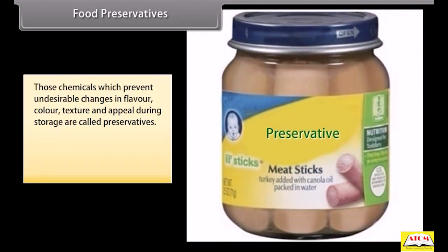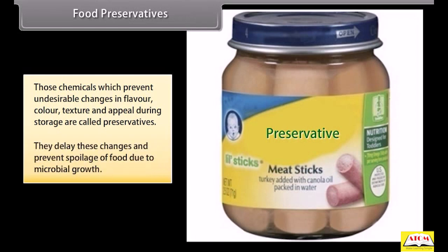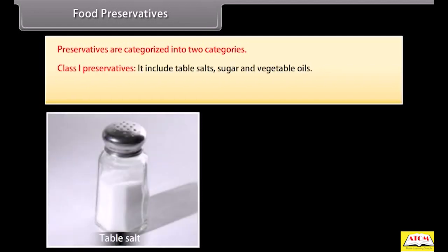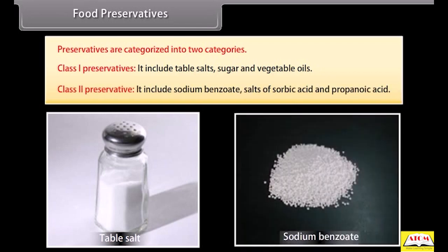Food preservatives: chemicals which prevent undesirable changes in flavor, color, texture and appeal during storage are called preservatives. They delay these changes and prevent spoilage of food due to microbial growth. Preservatives are categorized into two classes: Class 1 includes stable salts, sugar and vegetable oils; Class 2 includes sodium benzoate, salts of sorbic acid and propanoic acid.